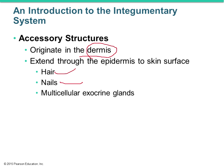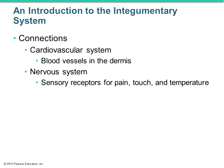In this organ system we're also going to see connections with the cardiovascular and nervous systems. In your skin you have blood vessels in the dermis — they're housed in connective tissue and get very close to the epidermis but don't work all the way up into it, which is why the epidermis is considered avascular. We'll also see nerve endings and sensory receptors for pain, touch, and temperature.